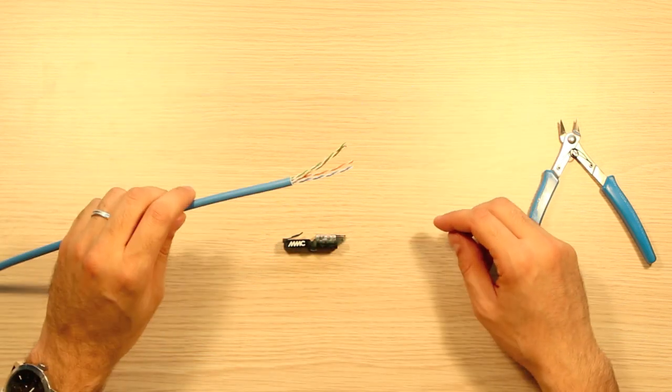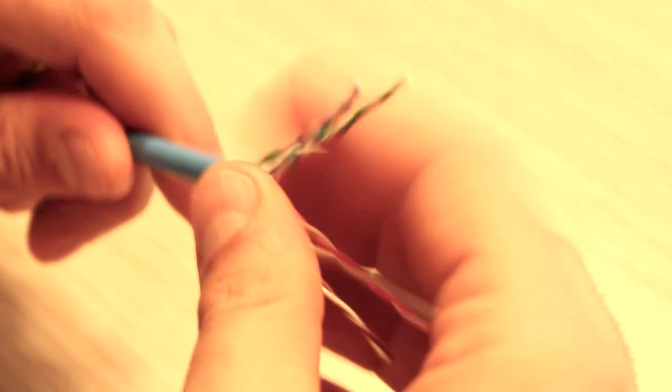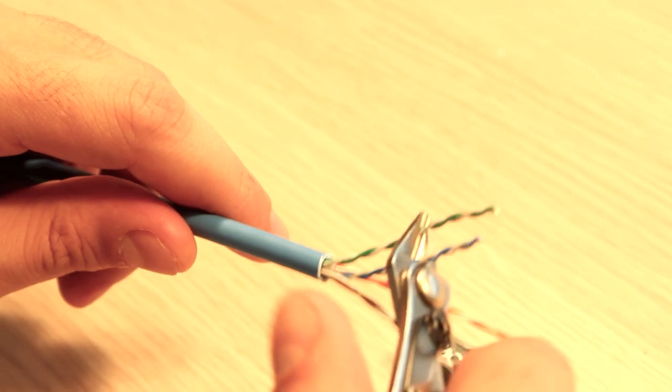Firstly, we have to strip the cable on 15mm and cut the blue, white-blue, and green-white pair at 20mm.